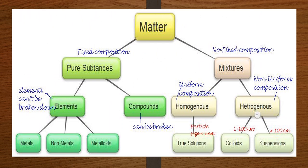In Chapter 2 we have studied matter as pure substances and mixtures. Pure substances are classified as elements and compounds. Elements include metals, non-metals, and metalloids. Mixtures are classified as homogeneous and heterogeneous. Homogeneous mixture is a true solution, while heterogeneous mixture is further classified as colloids and suspension.